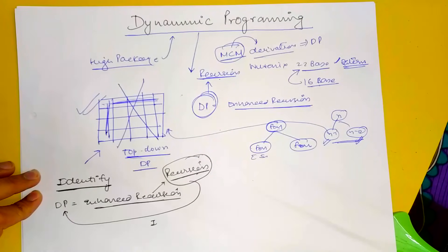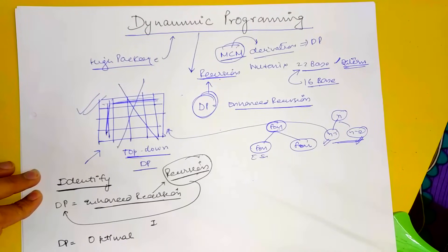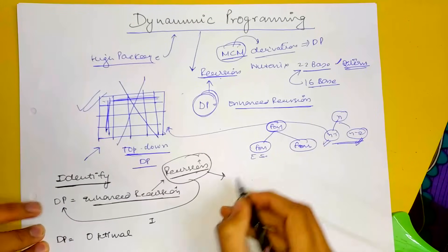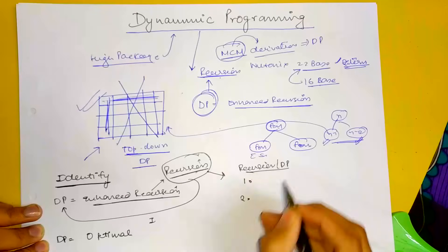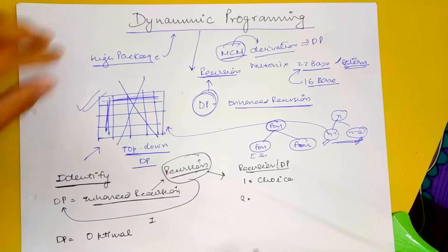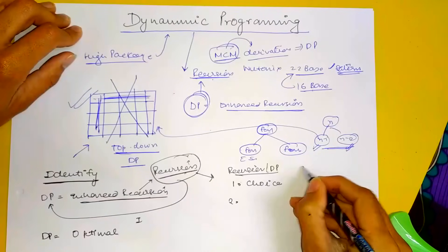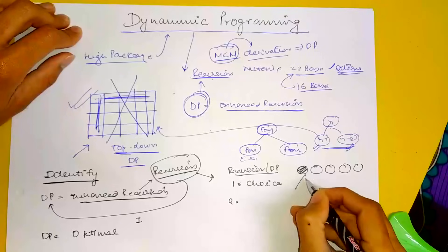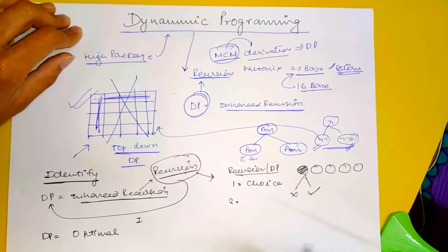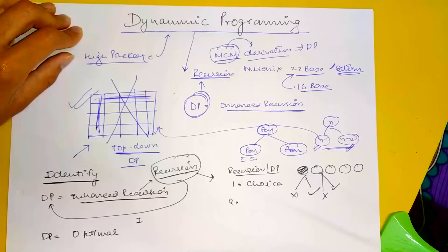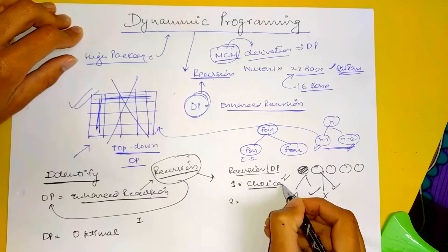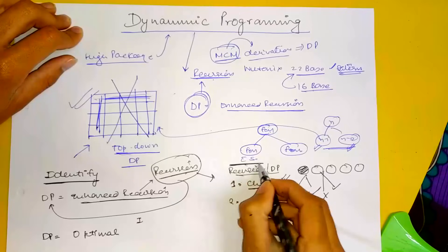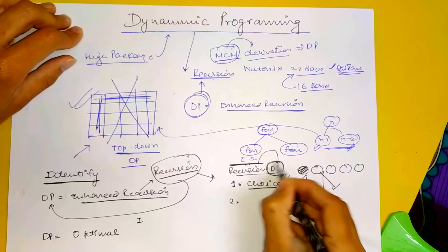How do we identify a DP problem? There are two points. First point: the DP problem is optimal — it asks for some optimal value. Second: there is a choice involved. If there is a recursion with overlapping subproblems, then it is DP. We will see what overlapping subproblems means.